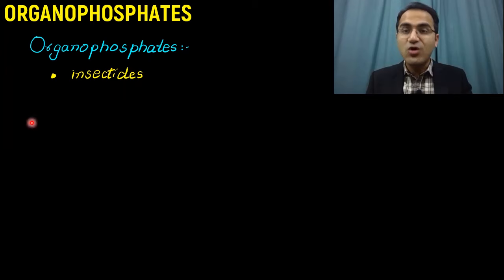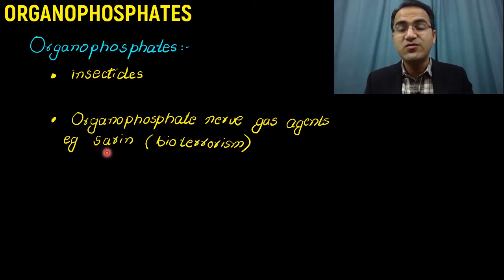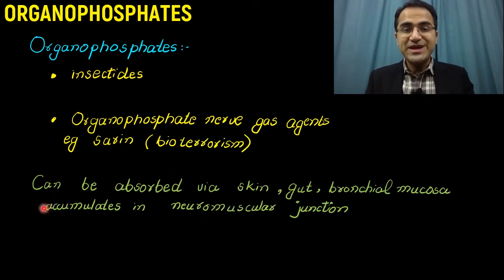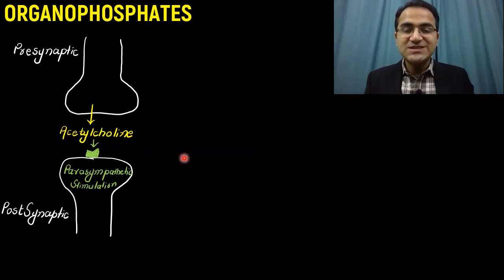First of all, organophosphates are commonly present as insecticides and their poisoning is more common in developing countries. Other than that, organophosphates nerve gas agents like sarin have been used as bioterrorism agents. They can be absorbed through skin, through gut, through bronchial mucosa and they accumulate in neuromuscular junctions.